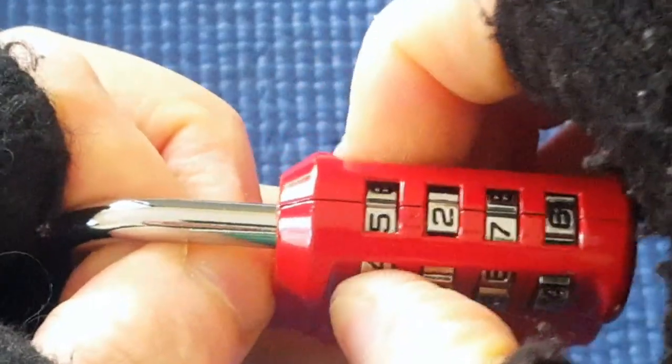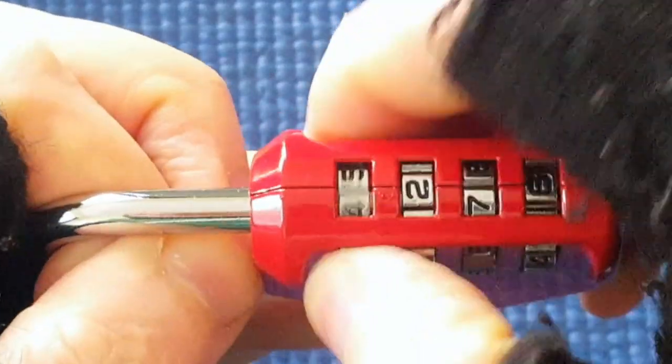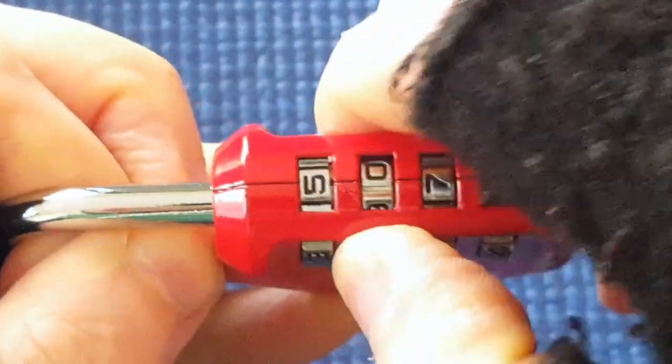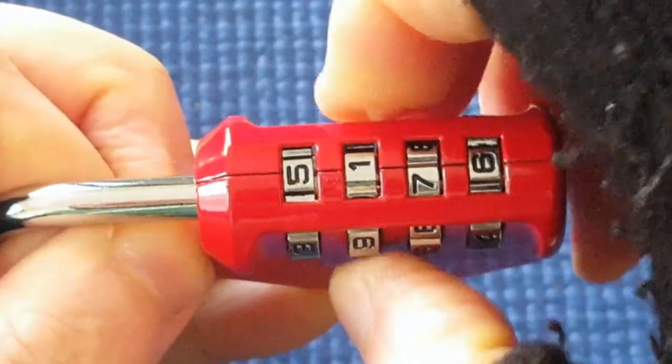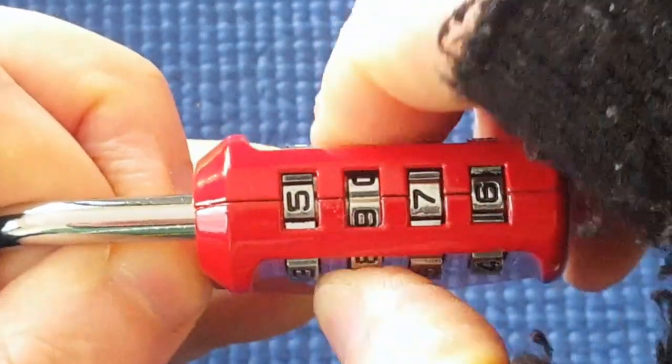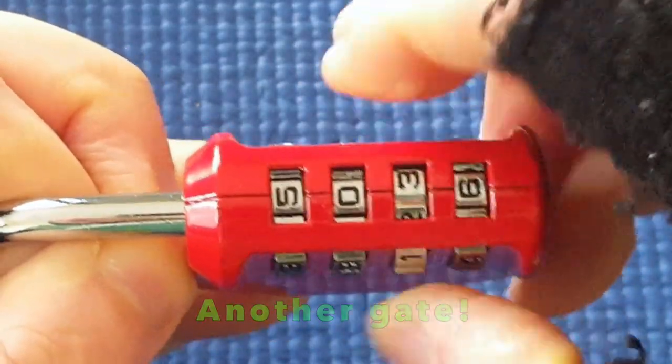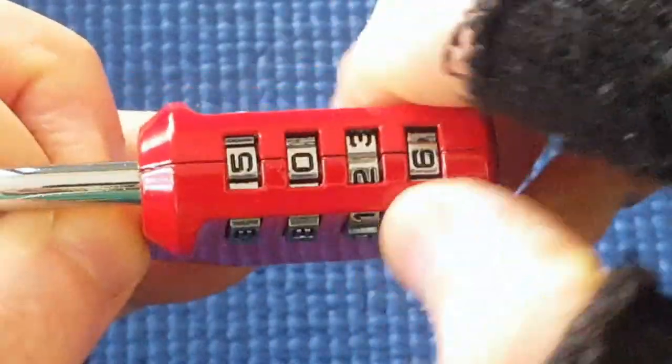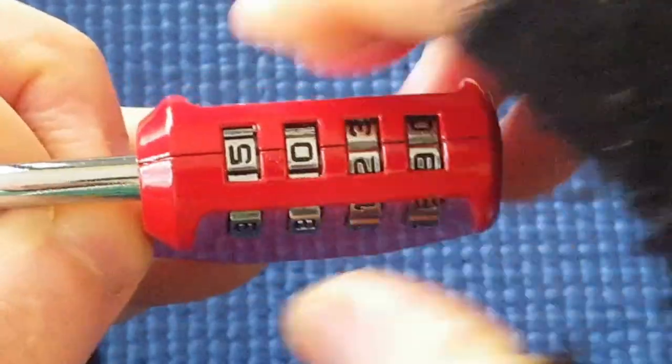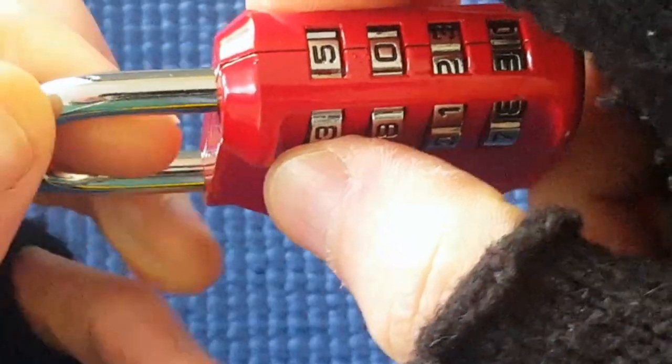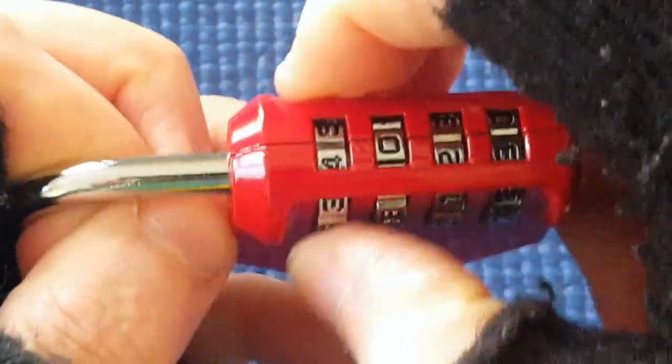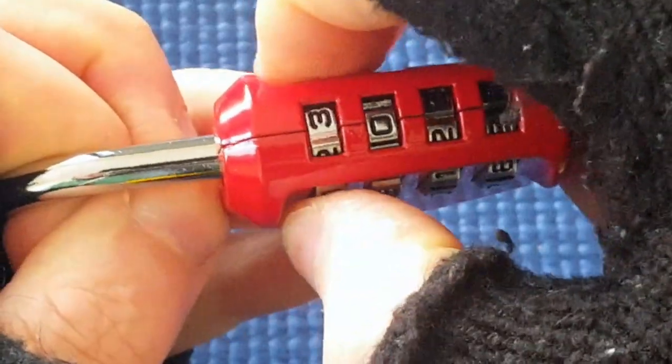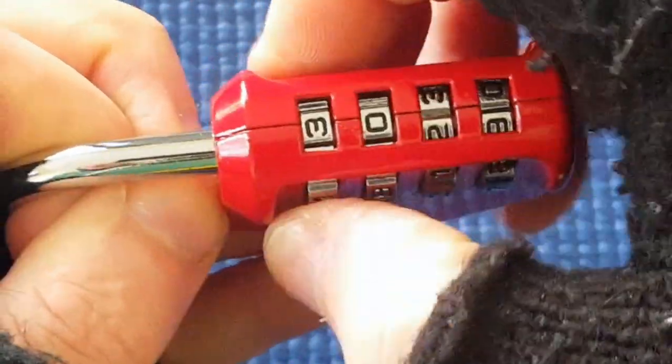Okay, this is quite tight to turn. It doesn't want to come out of five. And this turned, but now it doesn't want to come out of maybe zero. This turns, turns, turns, doesn't get stuck anywhere. And same with this. So I'm going to release tension a bit, turn this a bit, and tension again. See what else I can feel on this wheel. I'm picking on this wheel because it's tightest to turn.